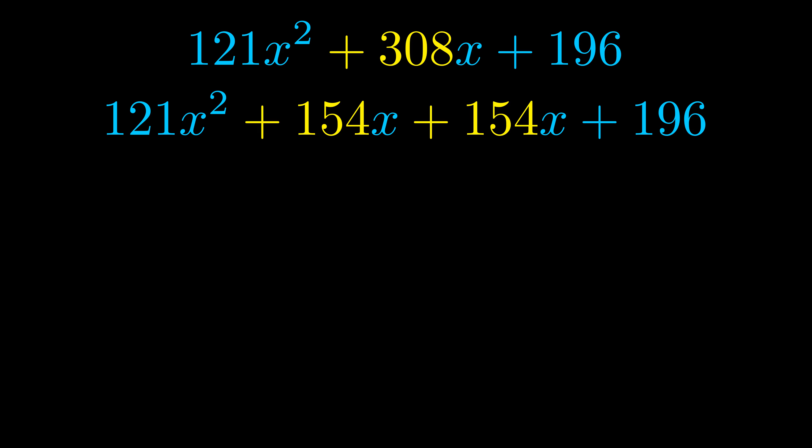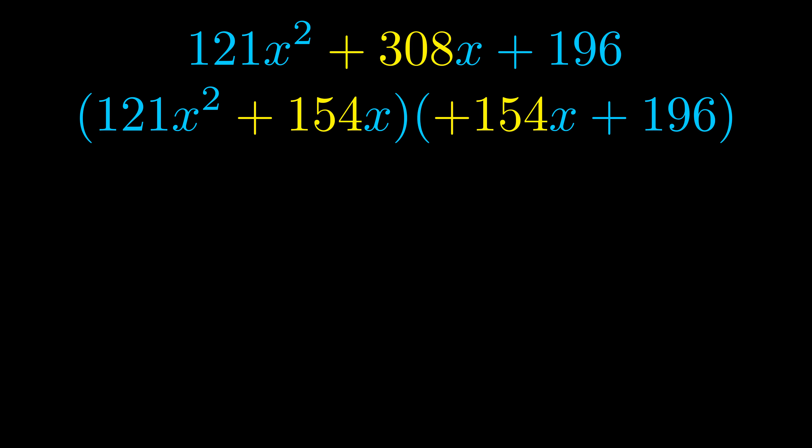Once we've done this, we put parentheses around the first term and the last term. And we do that so we can take the greatest common factor out of both terms. We can see the greatest common factor is now outside in green. Notice also how what remains inside the parentheses is the same in both cases. The blue values are the same.